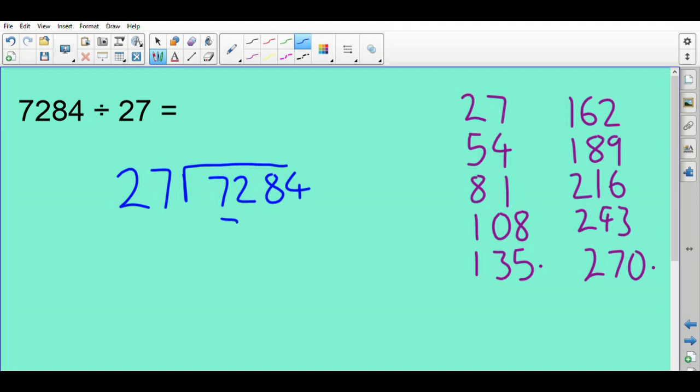27 into 7 doesn't go, I can't make a group of 27 with just seven. So instead of carrying it I bring it forward, and now I'm going to do 27 into 72. I'll come back to my multiples list - one, two. I can't get to 81, I can't make a third group, so I've got two there. I'm going to put the two up there, I will then have 54 here. I'm going to take that 54 away, so two times 27, subtract that 54, which is 18.